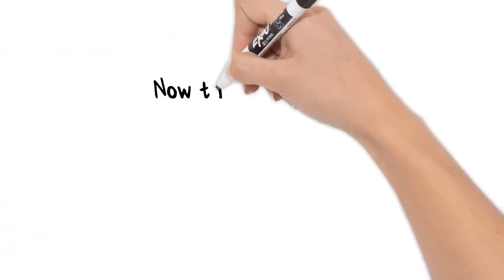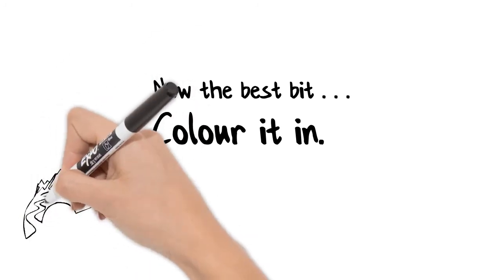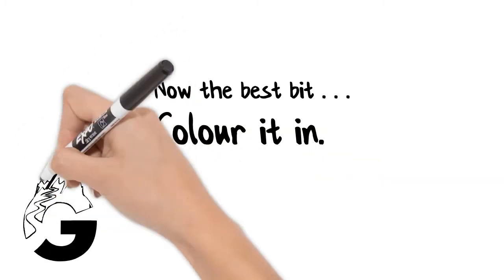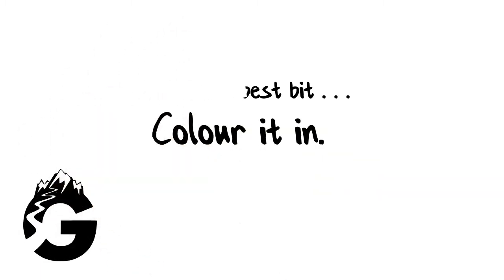Now, you get to do the best bit. Once you've drawn it, you can colour it in. My suggestion is you use green for the land, blue for the sea, and maybe a yellow or brown or both for the beach and the depositional features.